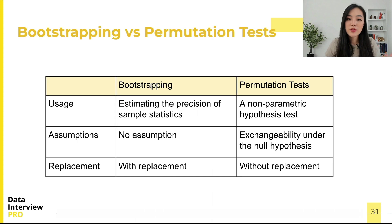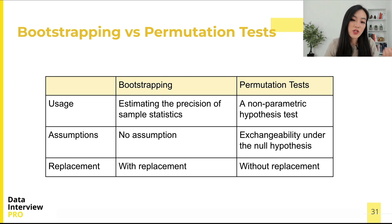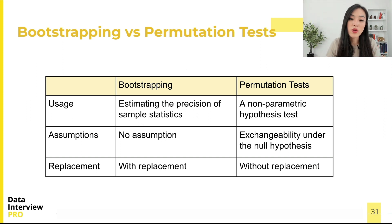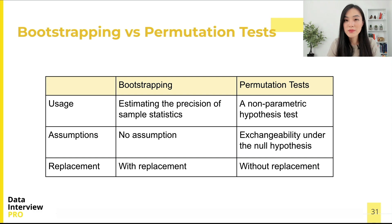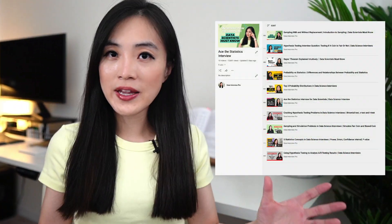Now let's compare the two methods. Bootstrapping is used to estimate the sampling distribution for the sample mean or other statistics — we sample with replacement from the original sample. By comparison, the permutation test is used to perform a hypothesis test when we may assume that the pooled sample points are exchangeable under the null hypothesis — we sample without replacement from the pooled data.